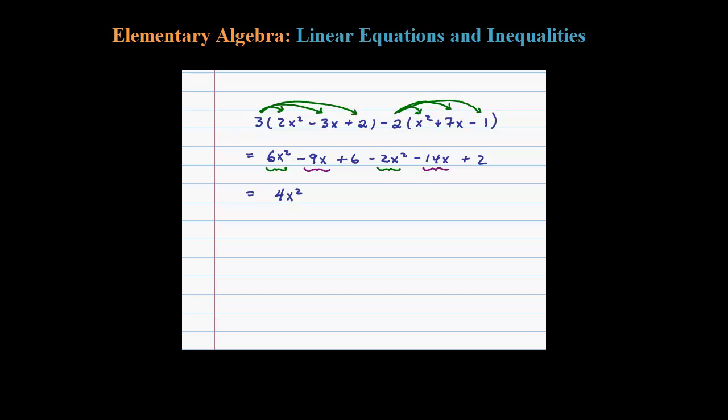Then we have the x terms: negative 9x plus negative 14x adds up to negative 23x, and then finally 6 plus 2 is 8.